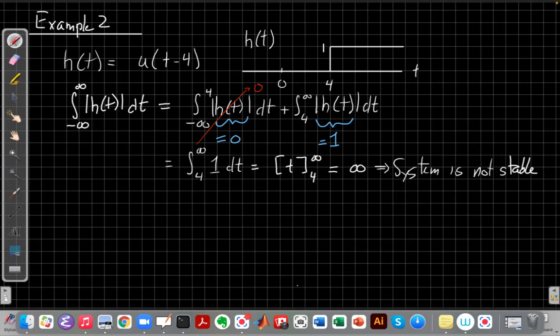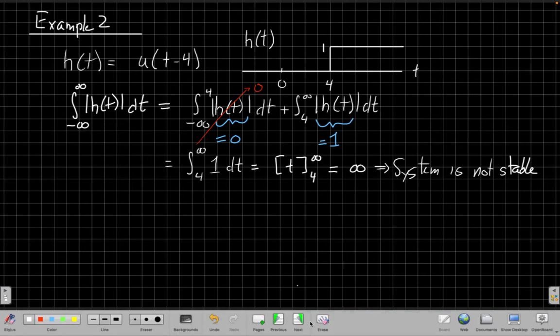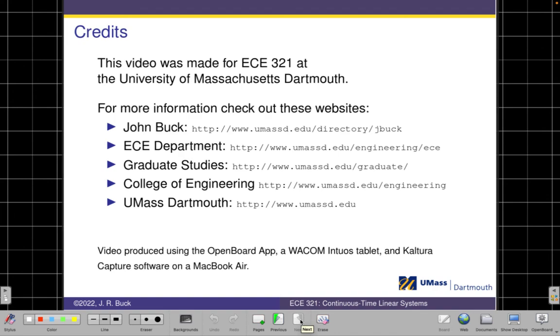So there's a basic intro into how we decide from the impulse response of a continuous time linear time invariant system is stable. Again, it comes down to, is the impulse response absolutely integrable? I've shown you two examples, one where it's stable, and one where it's not. And so we'll finish up here. This is a good length to stop the video, and I'll go on and make another video next about causality. It works the same way.